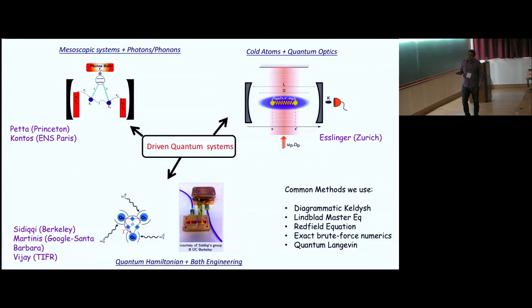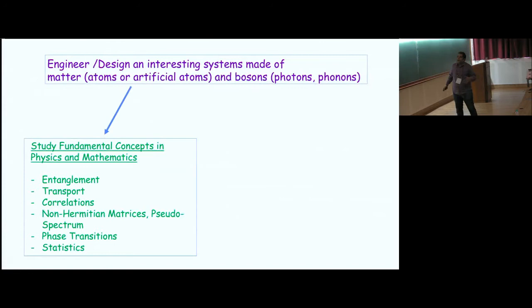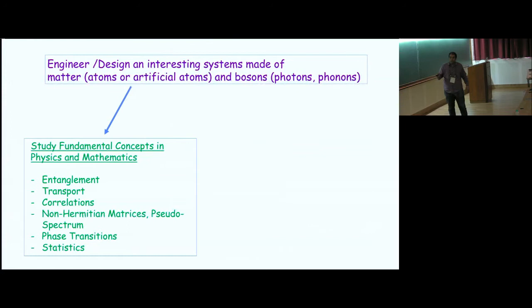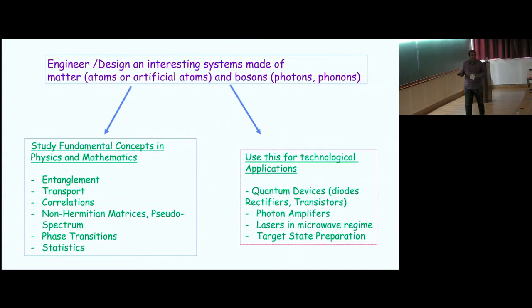The techniques we commonly use are Keldysh techniques, Lindblad equation, Redfield, brute force methods, and quantum Langevin, depending on the problem. These light-matter systems are overall Hermitian, but when you focus on a subsystem you get a non-Hermitian system. They are useful for studying entanglement, transport, correlations, non-Hermitian matrices, open phase transitions, and bosonic statistics out of equilibrium.